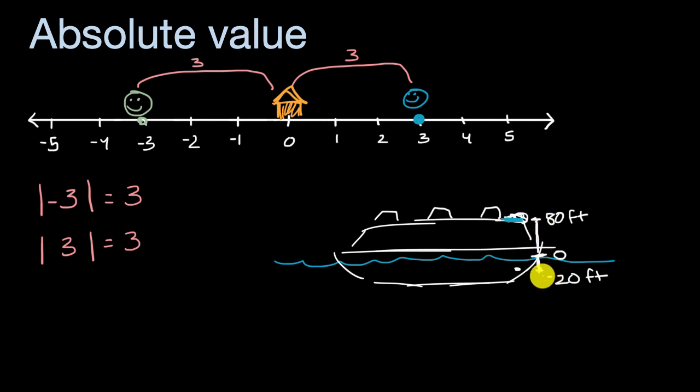But if you just wanted to know how far they are, well, you could take the absolute value. How far is that roof deck pool? If you take the absolute value of 80, you are going to get 80. How far is that engine room from zero? How far is it from sea level? Well, the absolute value of negative 20 is going to be 20.